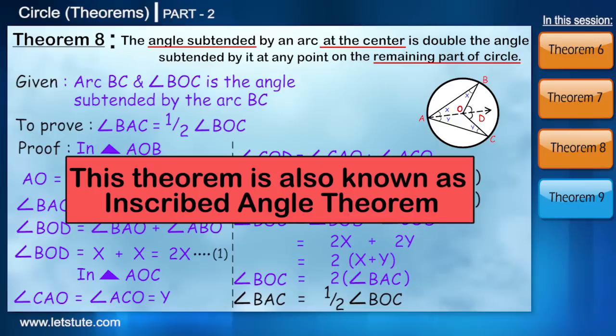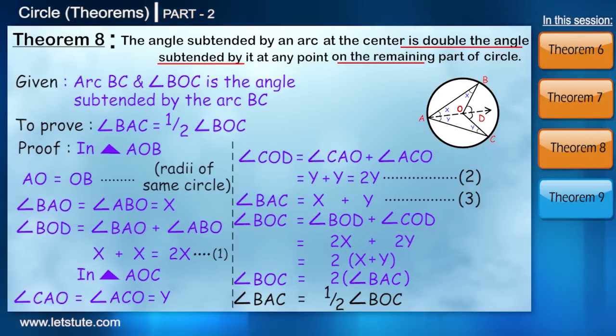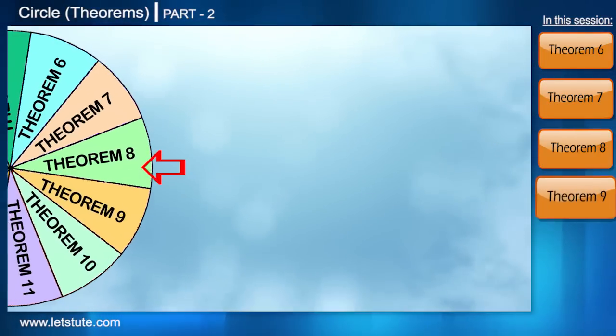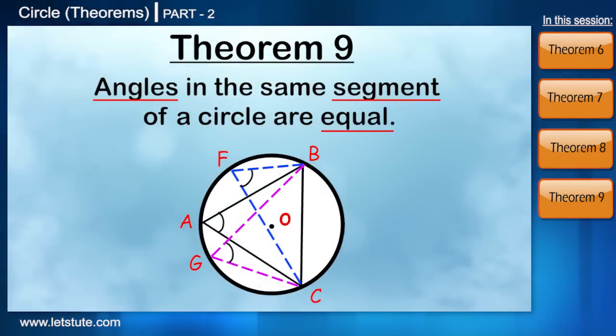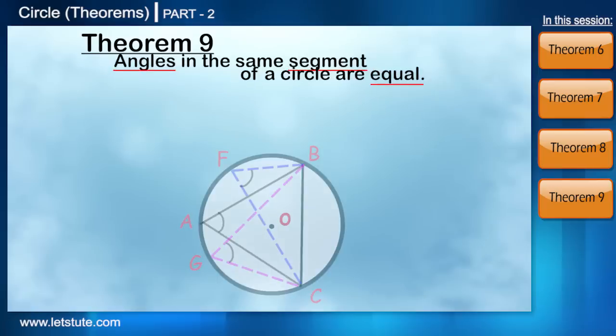If you found this one little difficult, do not worry. You can pause the video anytime and see it again till you understand and prove it on your own. Let's move to theorem number 9. Angles in the same segment of a circle are equal. This will be a lot easier because of the previous theorem that we just studied.